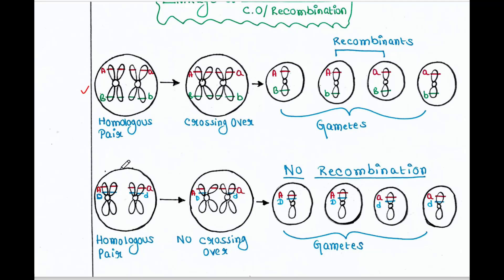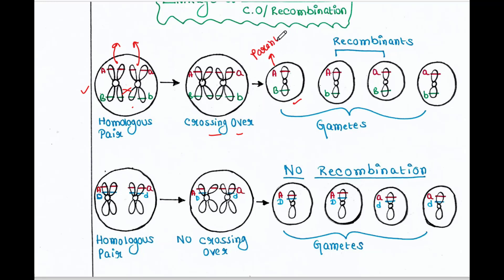Here we can see that in this cell, we have a homologous pair of chromosomes — chromosome number 1. Each chromosome contains two sister chromatids. This chromosome has gene capital A and capital B, and this chromosome contains gene small a and small b. Crossing over happens between these two, and after crossing over we can get four gametes. One gamete contains capital A and capital B — we can say this is the parental combination. The other parental gamete also has the parental combination.